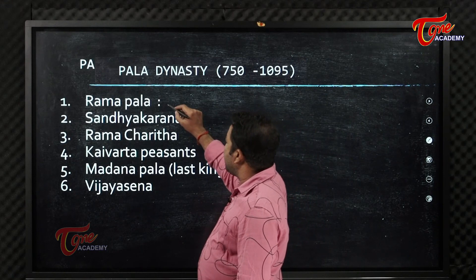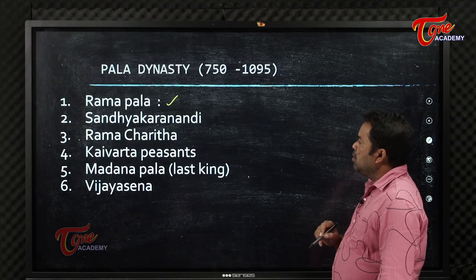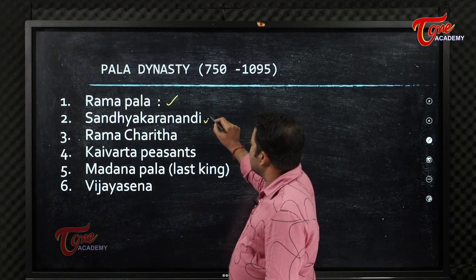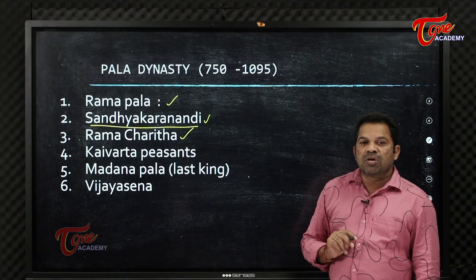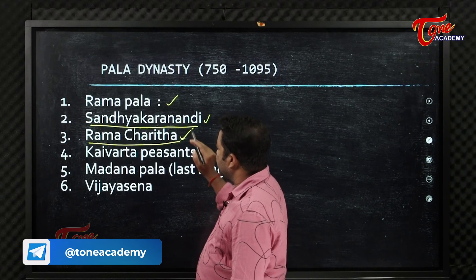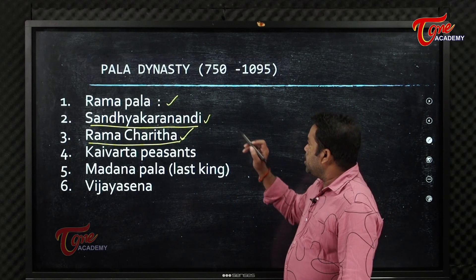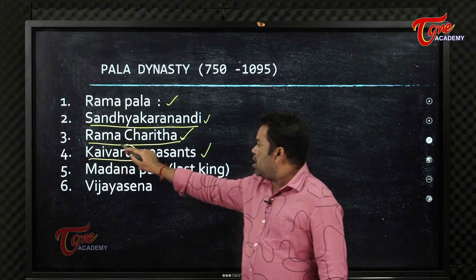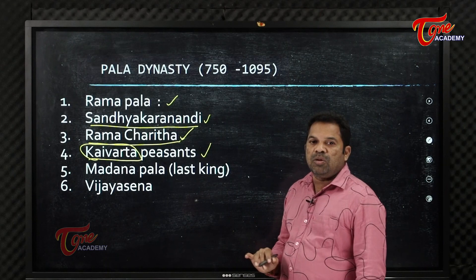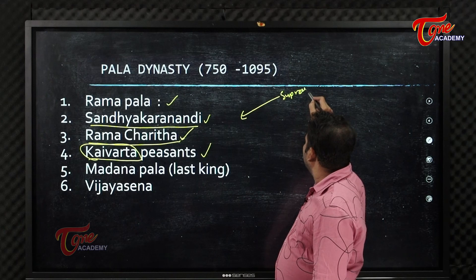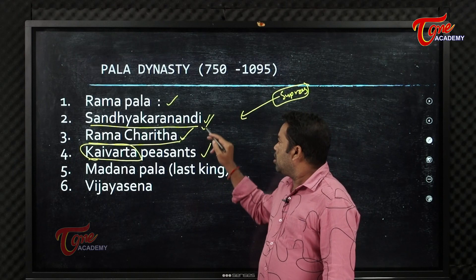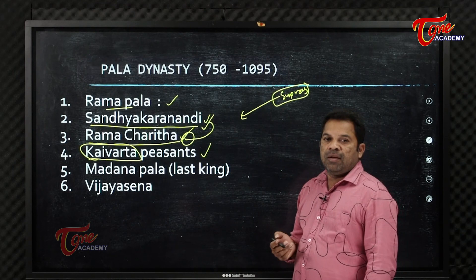The next important ruler of the Pala dynasty was Ramapala. During his time, the scholar Sandhyakaranandi wrote the Ramacharita. Ramapala suppressed the Kaivarta peasant revolt.